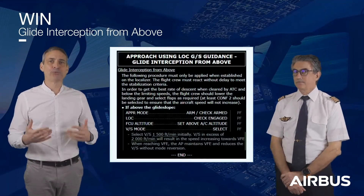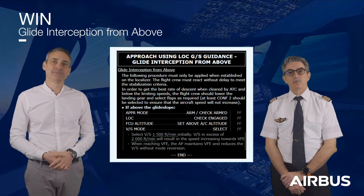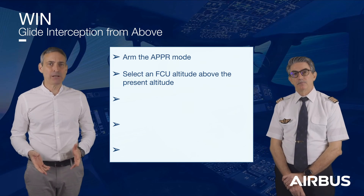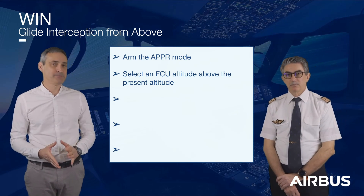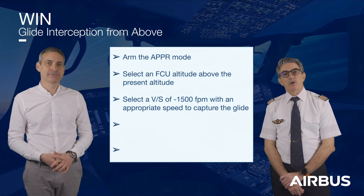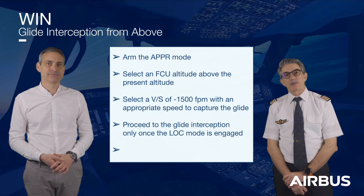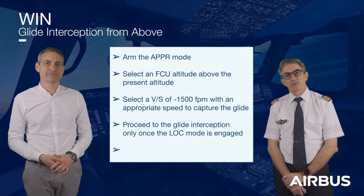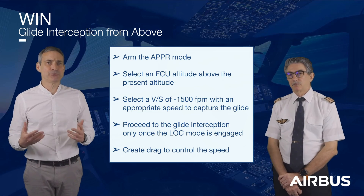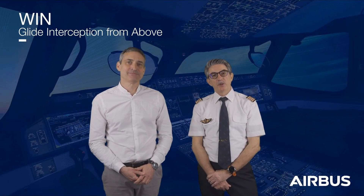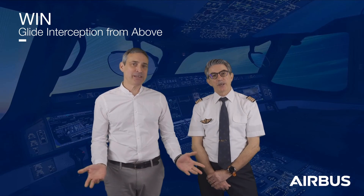To sum up: follow the logical steps of the procedure. Remember to arm the approach mode. Remember to select an FCU altitude above the current altitude. Initially select a vertical speed of minus 1,500 to minus 2,000 feet per minute with an appropriate speed to capture the glide. Remember: proceed to the glide interception only when the LOC mode is engaged. Create sufficient drag to control the speed. And as usual, the golden rules apply. We hope you enjoyed this WIN video and see you around for the next one.